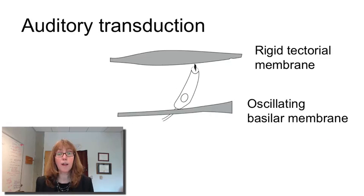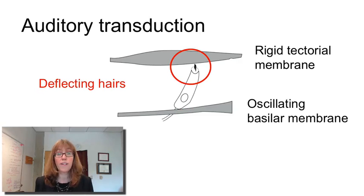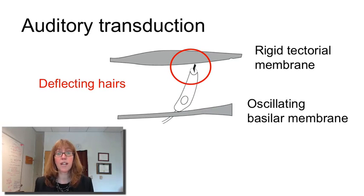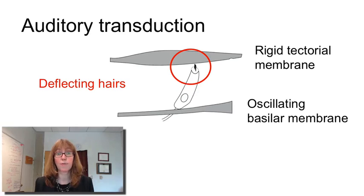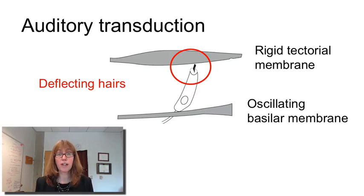And this is how auditory transduction occurs. We've got our oscillating basilar membrane and our rigid tectorial membrane and hair cells riding that wave on the basilar membrane. As those hair cells ride that wave, their hairs deflect. And it looks something like this. As the basilar membrane moves up and down, the hairs deflect back and forth. What is special about those hairs deflecting back and forth is what happens next.